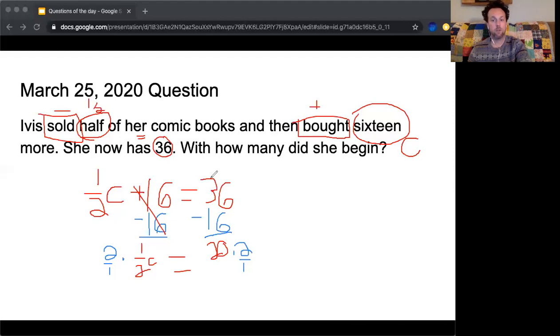So 2 times 1 half cancels out leaving us with C equals, and then what's 20 times 2? Well 2 times 2 is 4, I put a 0 on the end, 40. So 1 half of 40 plus 16 equals 36. And if we do that in reverse, 40 divided by 2 or 40 times 1 half gives me 20 plus 16 which gives me 36. So Evie started out with 40 comic books but then after buying and selling she has 36.